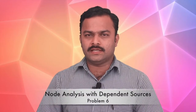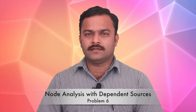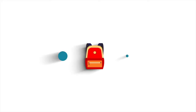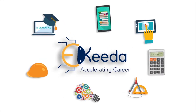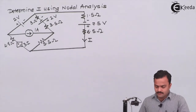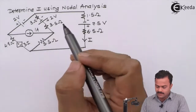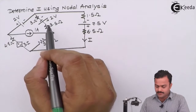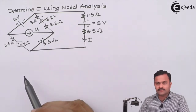In this video, we are going to see a problem based on nodal analysis for a circuit where dependent sources are also present along with independent sources. The problem requires us to determine the current i by using nodal analysis. The circuit has so many sources present — some of them are independent sources and some of them are dependent sources. So let's solve it by nodal analysis.